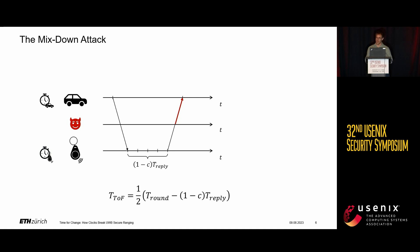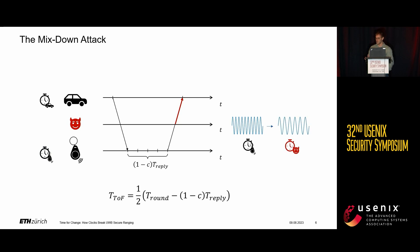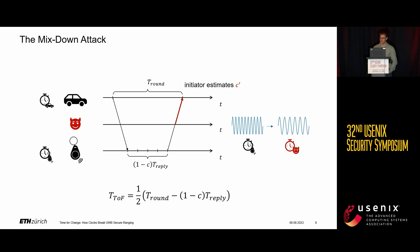By changing the carrier frequency and amplifying the response, the attacker convinces the initiator that the clock of the responder is going at a slower speed, even though it isn't. The initiator then estimates this artificially introduced clock drift C prime, thinks the responder is running slow, and this overcompensation results in a distance reduction attack.